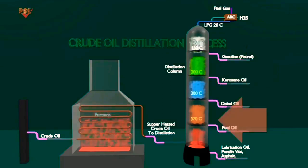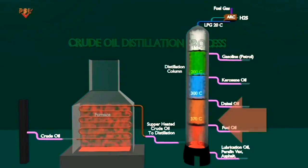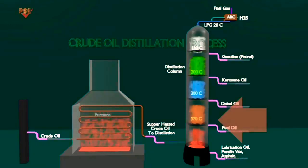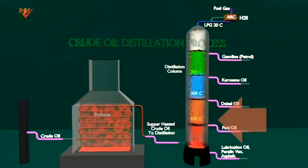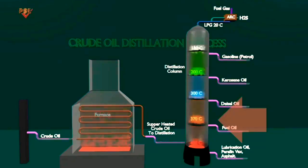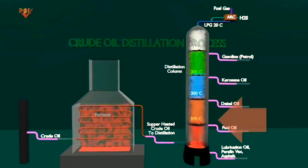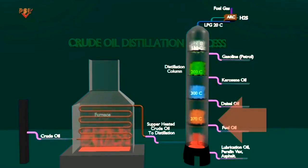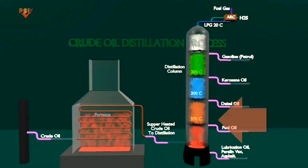Heavier distillate streams are also treated and blended into finished diesel fuel or home heating oil, or are further processed in conversion units such as fluidized catalytic cracking and hydrocracking. The routing of these streams will vary as product demand changes to either maximize diesel production or gasoline production.